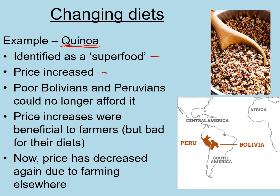Because quinoa became more popular, the price went up — this was occurring in wealthier countries like North America, Europe, and the UK. Quinoa comes from Peru and Bolivia, where it is part of their staple diet — just like wheat is a staple food in the UK and rice is a staple food in many Asian countries.